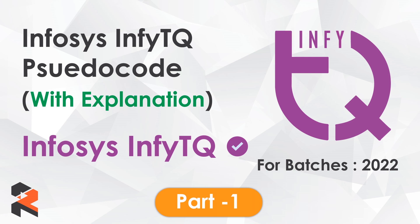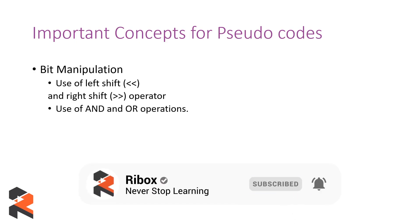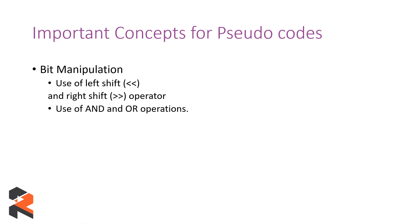The first concept we are going to talk about is bit manipulation. Bit manipulation is really necessary if you are into programming and coding because it helps you perform operations in a very efficient manner. You need to have knowledge of bit manipulation, especially the left shift and right shift operators, because in pseudocode questions this is something where students get confused.